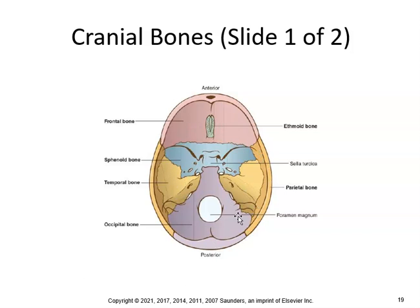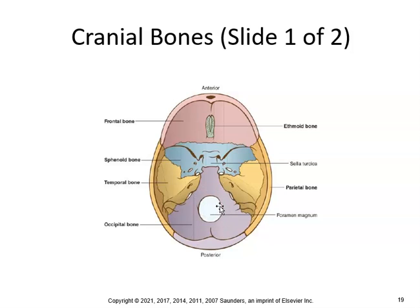Here's a view of the cranium from the top. Looking down from above, you can see the frontal bone, the ethmoid bone, the sphenoid bone — where the pituitary gland sits in the sella turcica — the parietal bone, and the occipital bone. The foramen magnum is where the spinal cord exits.